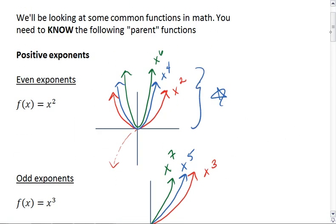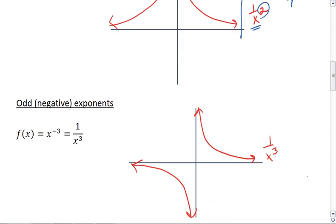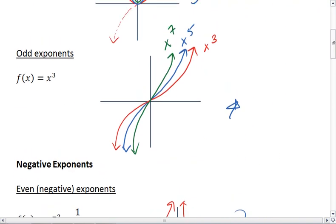What happens with our odd exponents, such as x cubed and 1 over x cubed, is that if x is negative, the output will be negative. Which is why we see that we have some negative output values.